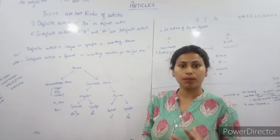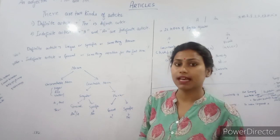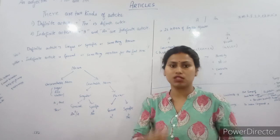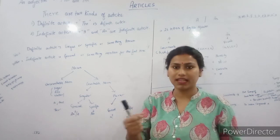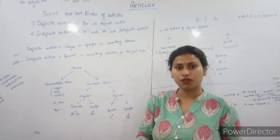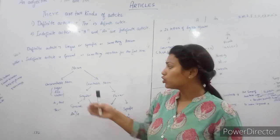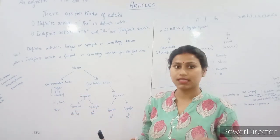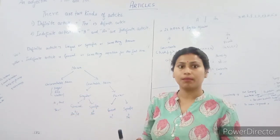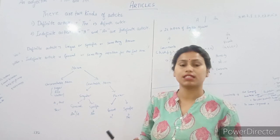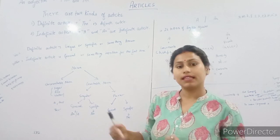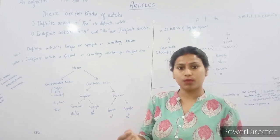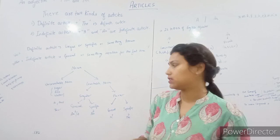For example, sugar is uncountable. We cannot say one or two sugars, we say 1 kg, 2 kg, 5 kg. Similarly, water - we add 1 glass of water or 5 liters of water. For rice, we say 1 or 2 cups of rice.